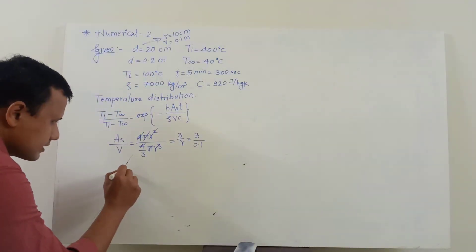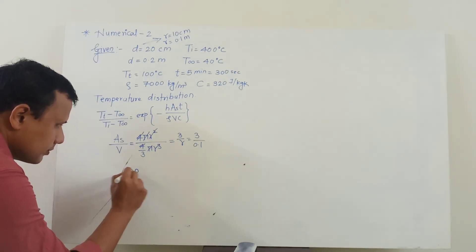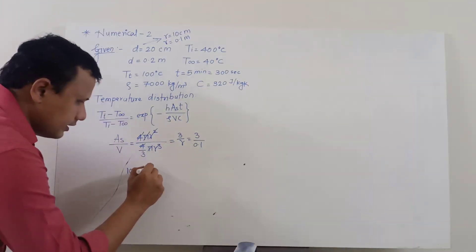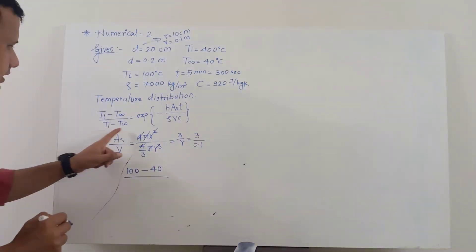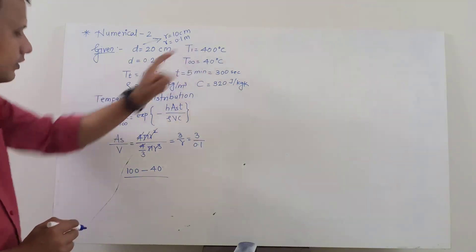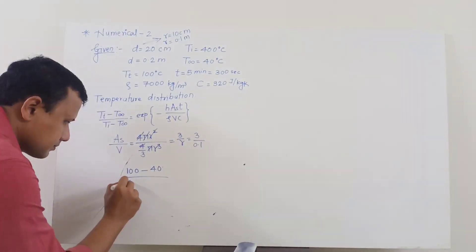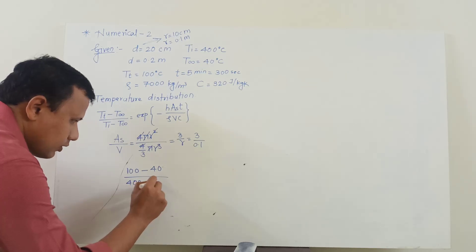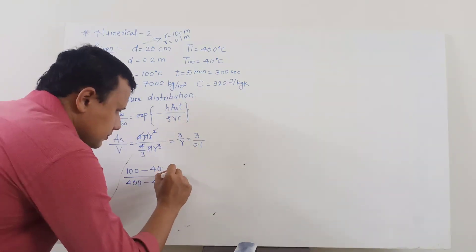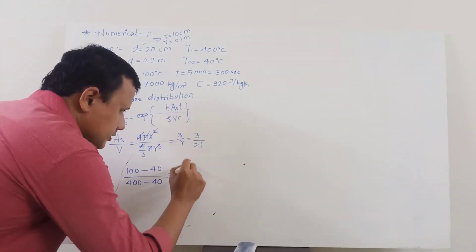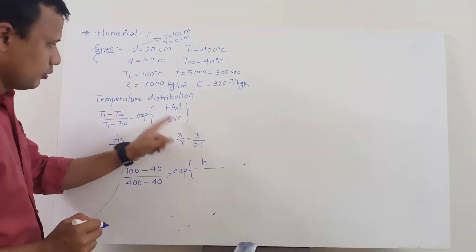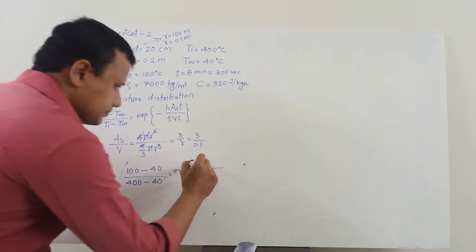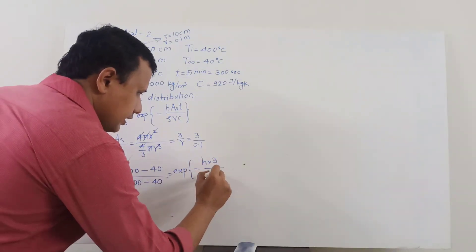We will put in all the values now. So T_t, temperature at particular time t is 100 degrees Celsius, so I will start writing down the temperature distribution. T_infinity is 40 degrees Celsius. After that, T_i minus T_infinity, so initial temperature is 400 degrees Celsius, so that's 400 minus 40.